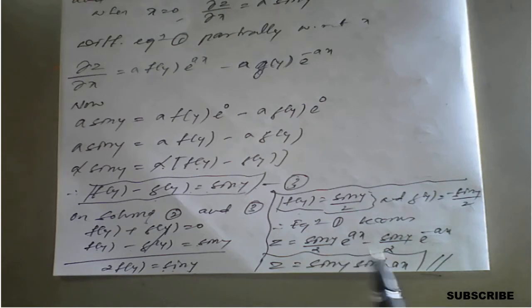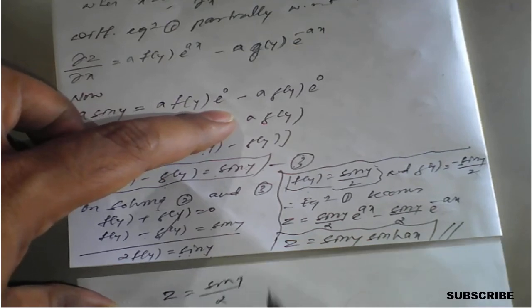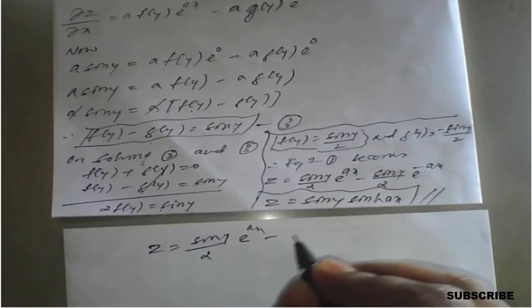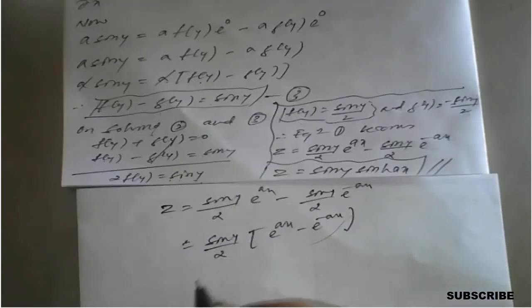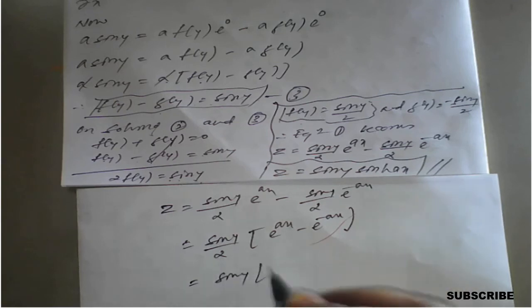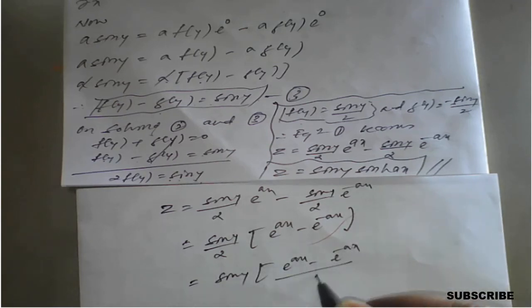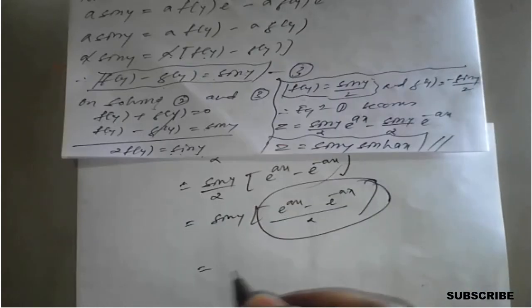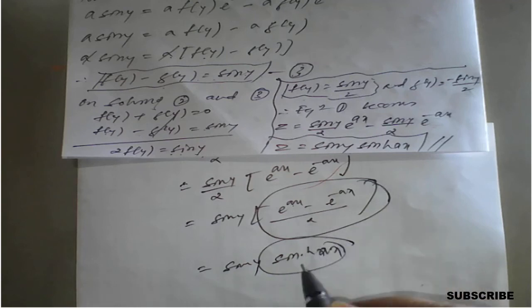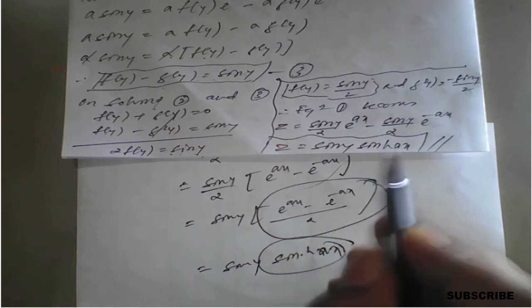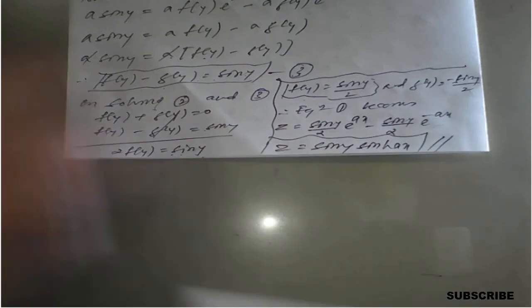Substituting f(y) and g(y) into equation one: z = (sin(y)/2)·e^(ax) − (sin(y)/2)·e^(−ax). Taking sin(y)/2 as common: z = sin(y)·[(e^(ax) − e^(−ax))/2], which is the formula for sinh(ax). Therefore, z = sin(y)·sinh(ax).